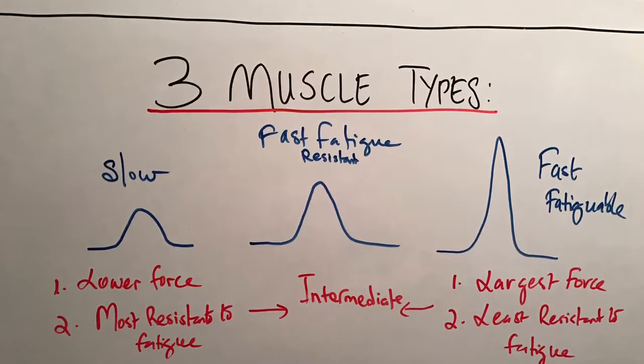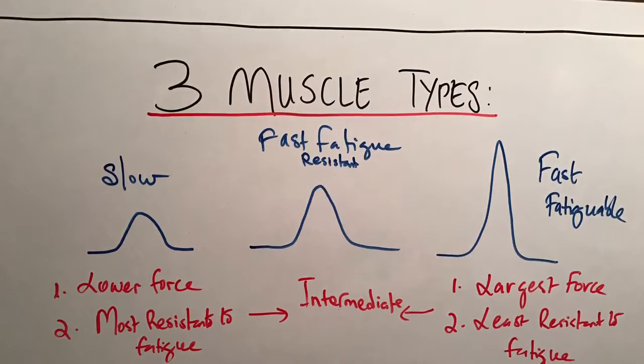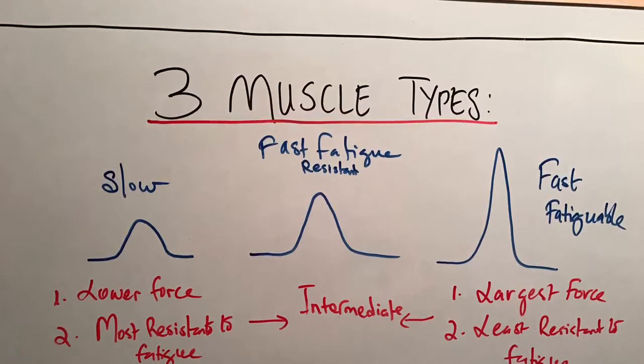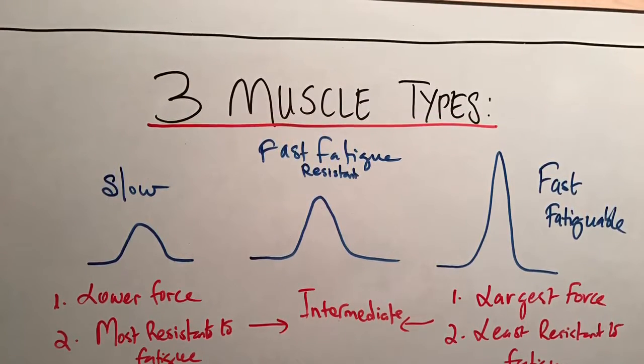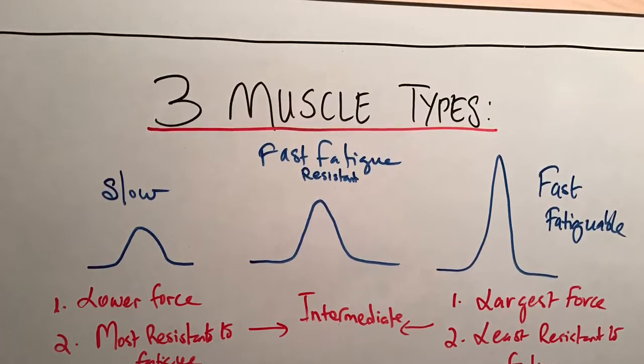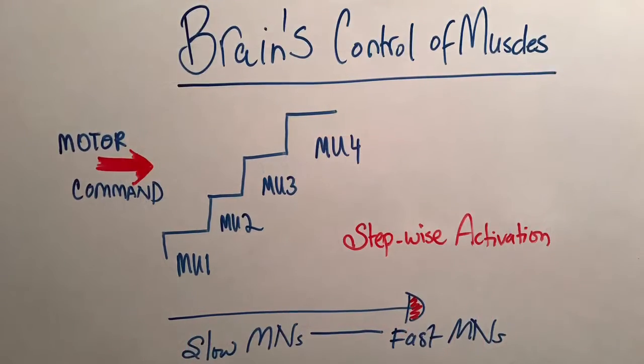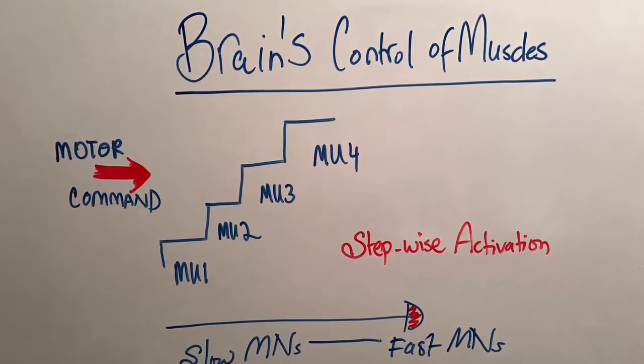Thus, the motor unit block is electrically stimulated at its preferred threshold by our motor cortex based on its intrinsic properties of the innervated muscle fibers, with the slowest units being activated first.